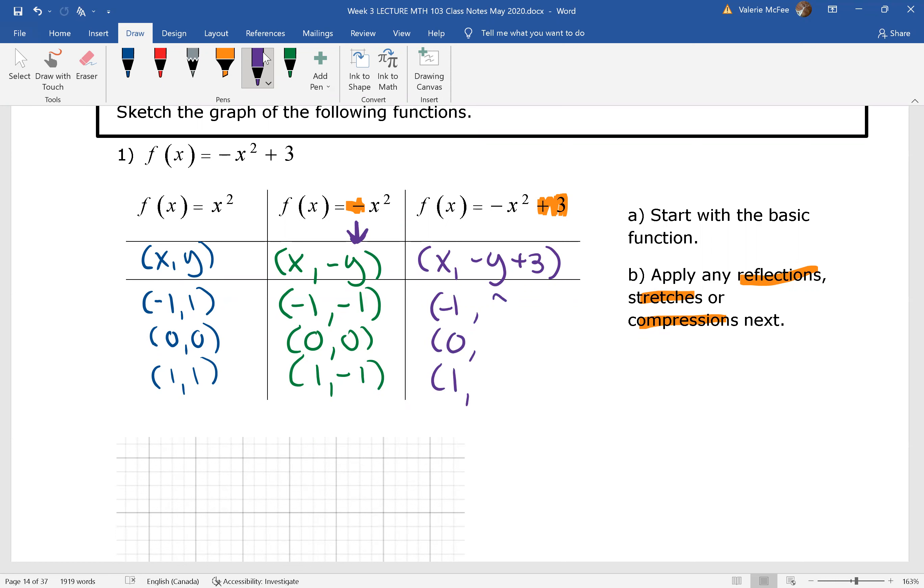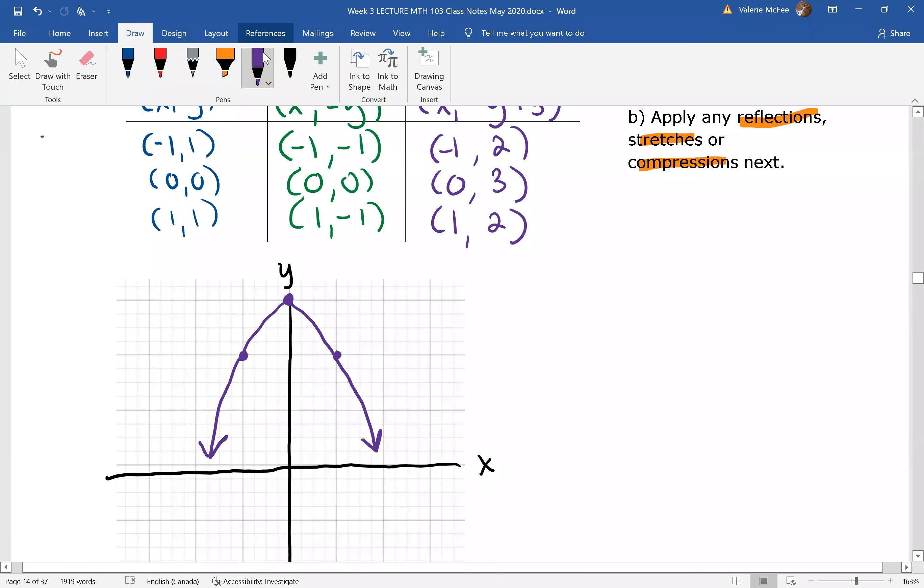And now I have negative 1 plus 3, 0 plus 3, and negative 1 plus 3. Why don't you graph those ordered pairs? Did you know your graph would look like this? You should have.